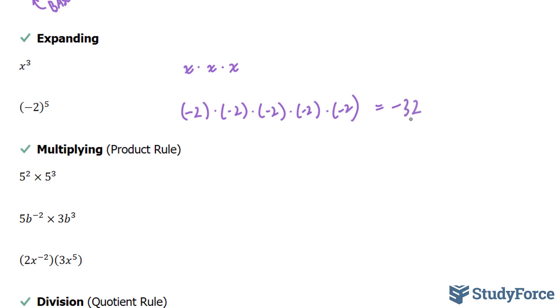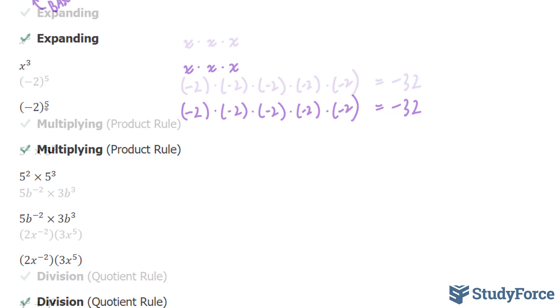One rule of thumb is that if your base is negative and your exponent is odd, then your answer will always end up negative. So for example, if this 5 were a 6, then your answer would be positive.